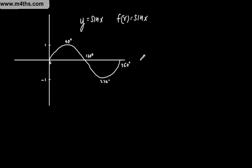The graph that goes on from here is exactly the same. It has a period of 360 degrees, or as you'll later find out, 2 pi radians. Maximum of 1 at 90. Minimum of minus 1 at 270.